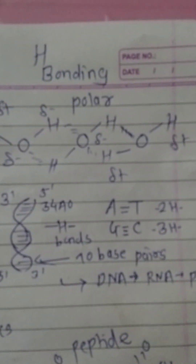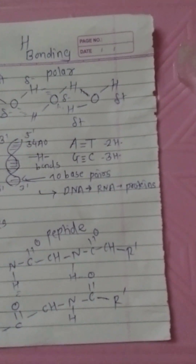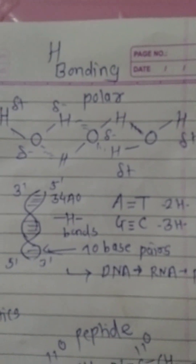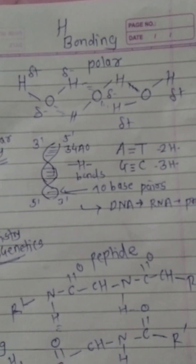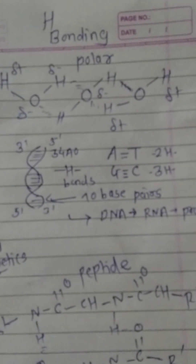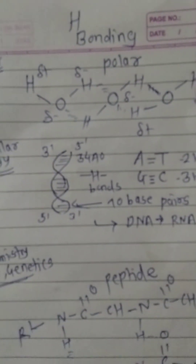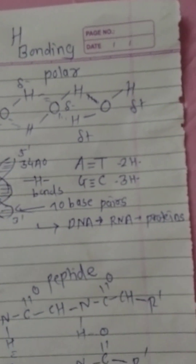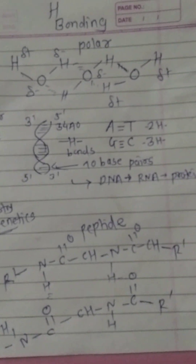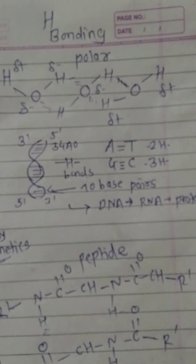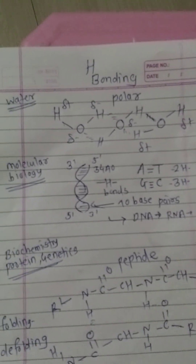In ice, water molecules get hydrogen-bonded with different molecules, forming a stable ice structure — hydrogen bonding is responsible for this stability. In molecular biology, the 3' and 5' strands of DNA base pairs form loops with a strand distance of 34 angstroms. Each base pair has a distance of 3.4 angstroms, with hydrogen bonds present. Per loop, 10 hydrogen bonds exist between adenine, thymine, guanine, and cytosine — with 2 and 3 hydrogen bonds respectively.